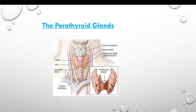The structure around the larynx — the larynx is the voice box. The thyroid gland is butterfly-shaped. The parathyroid gland is located on the posterior surface of the thyroid gland.